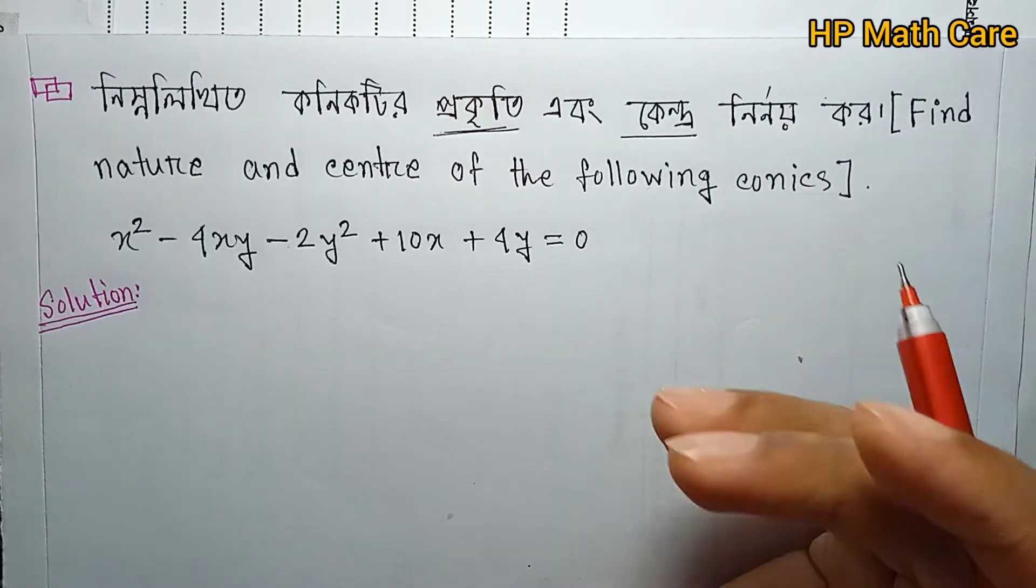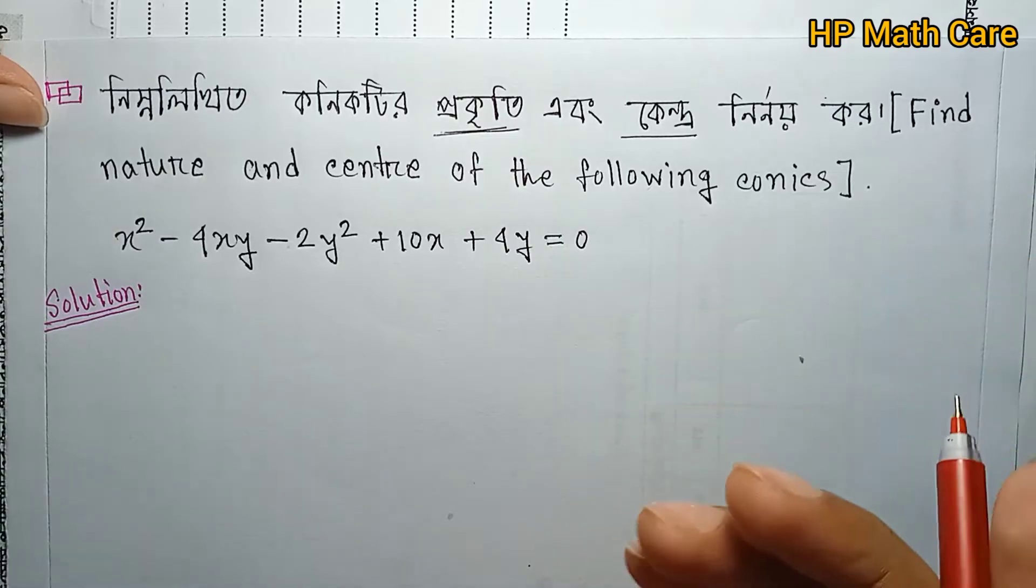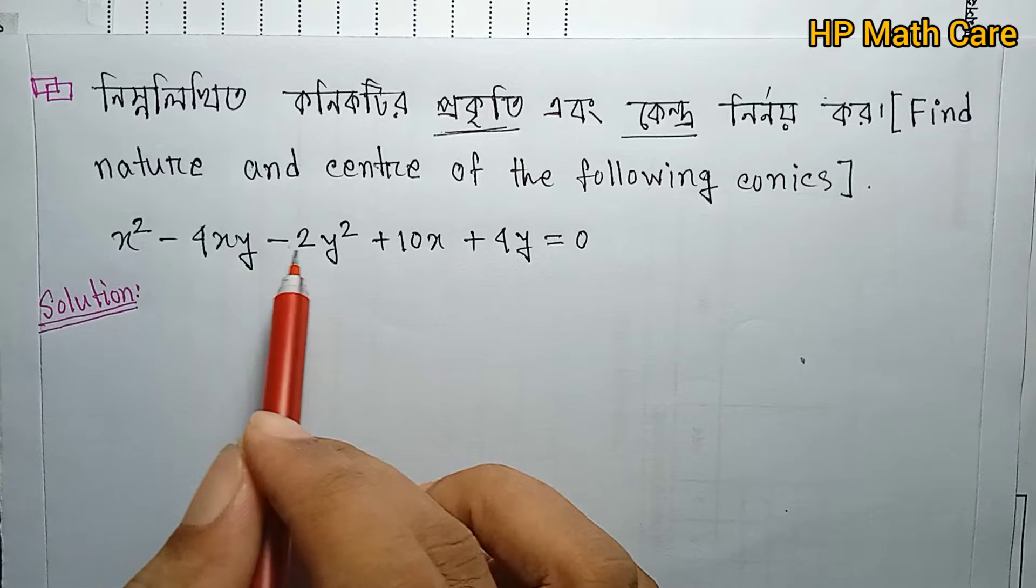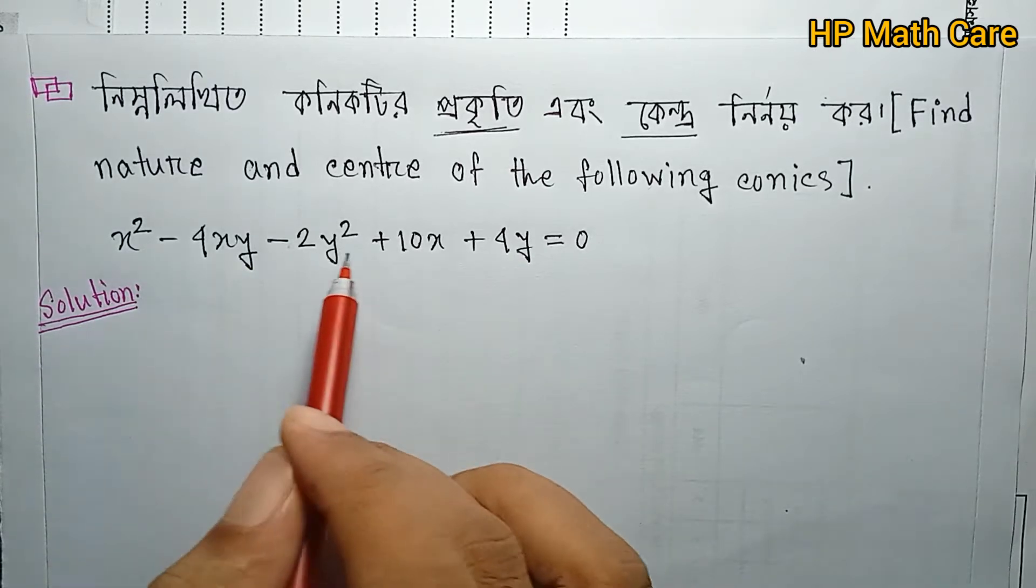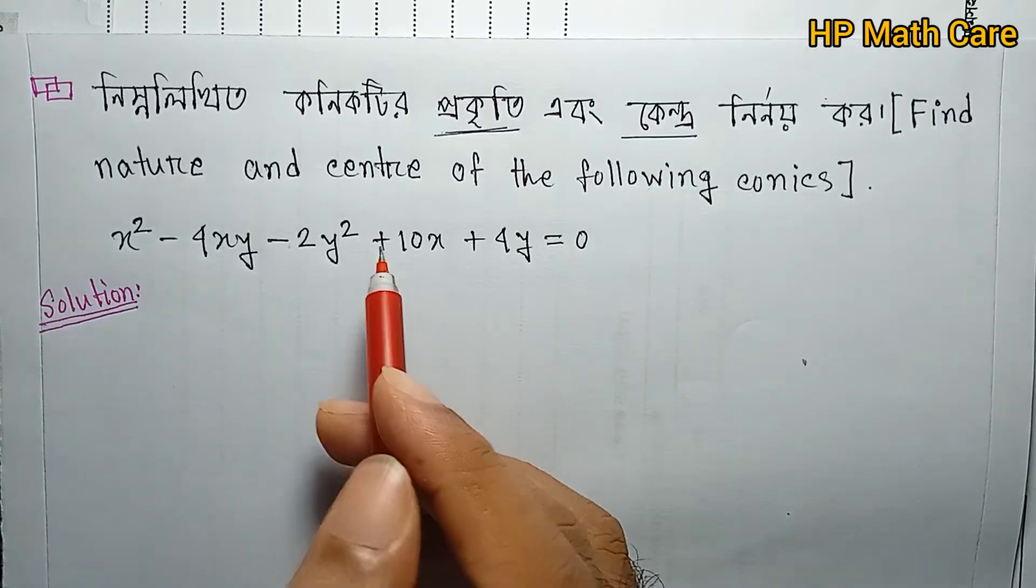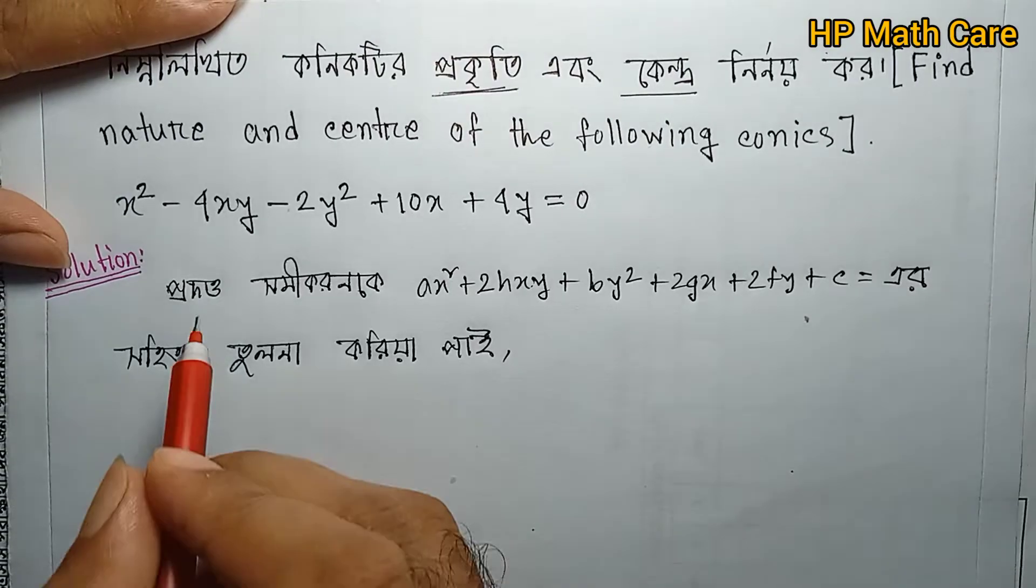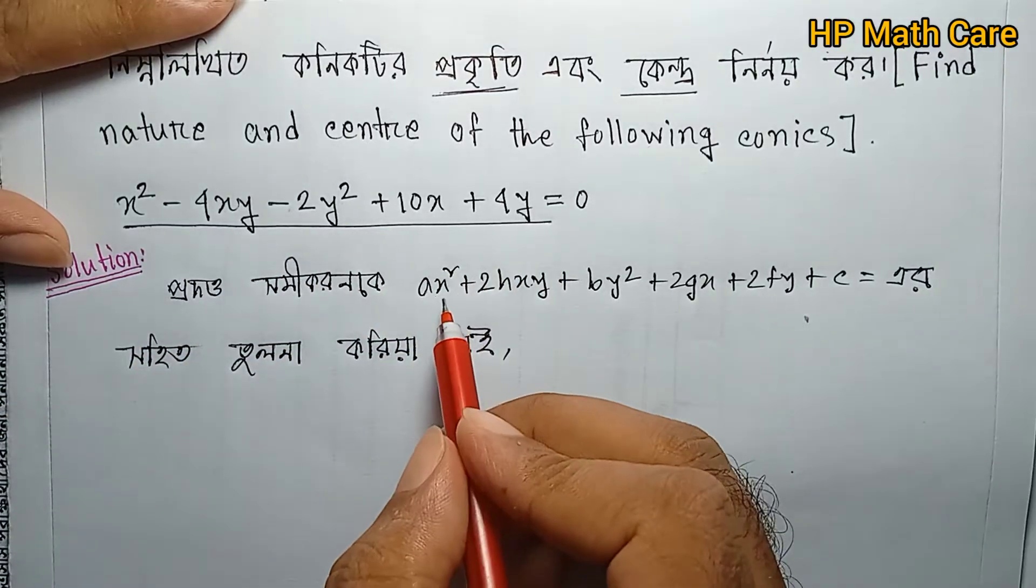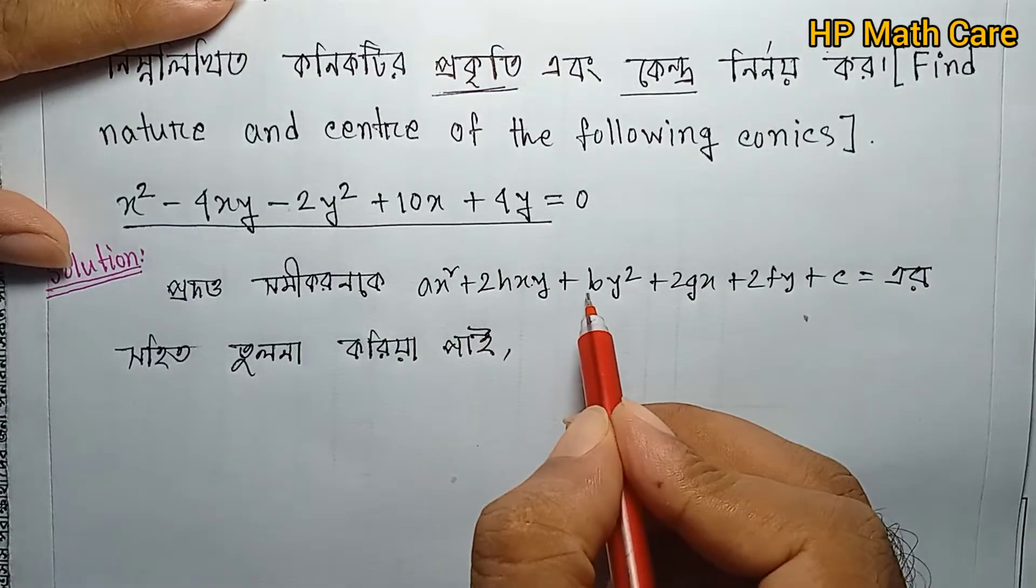For the first problem, x² - 4xy - 2y² + 10x + 4y = 0. We need to compare this equation with the general conic equation.